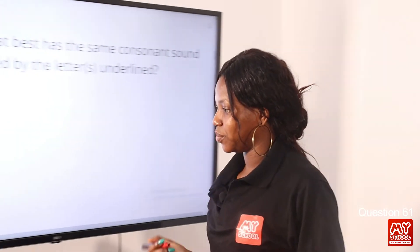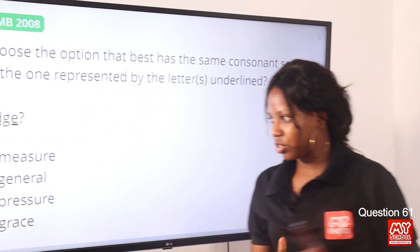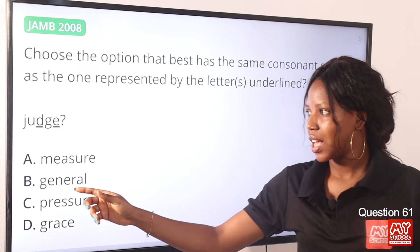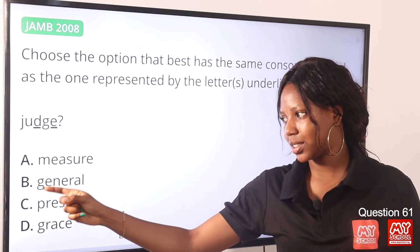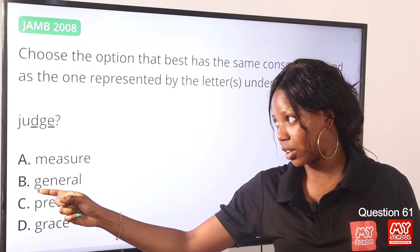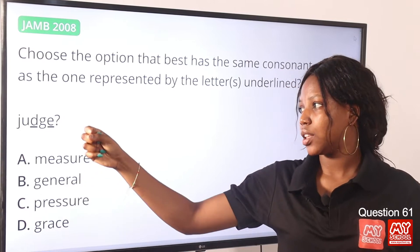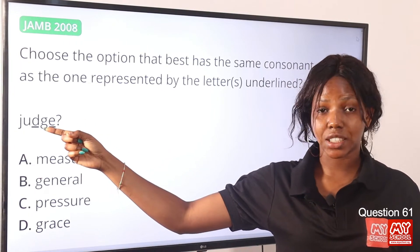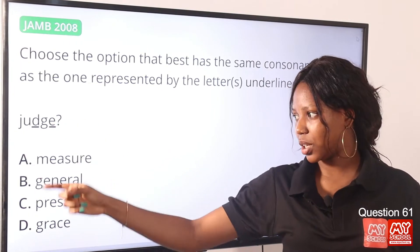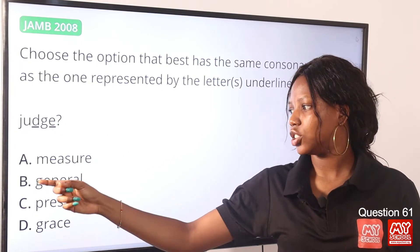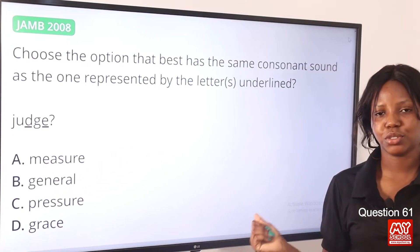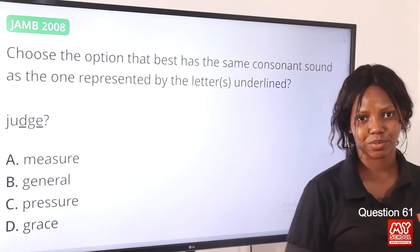Let's head back to the screen. From the transcription on the board, we can conclude that the word 'general' has the same consonant sound as the letters on the line in the word 'judge.' So we have judge and general. Option B, therefore, is the correct answer to this question.